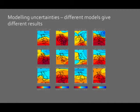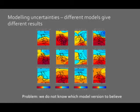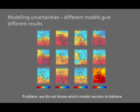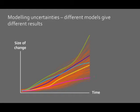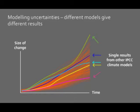Here we have some of the outputs from the other global climate change models. Their results are all quite different from the Hadley Centre model, which is the one we've been using up till now for UKCP09. The Hadley Centre model is known to be quite dry, and as you can see from these graphics the other models give different potential futures for the UK. Other climate models are based on single runs rather than the multiple run approach adopted by UKCP09.